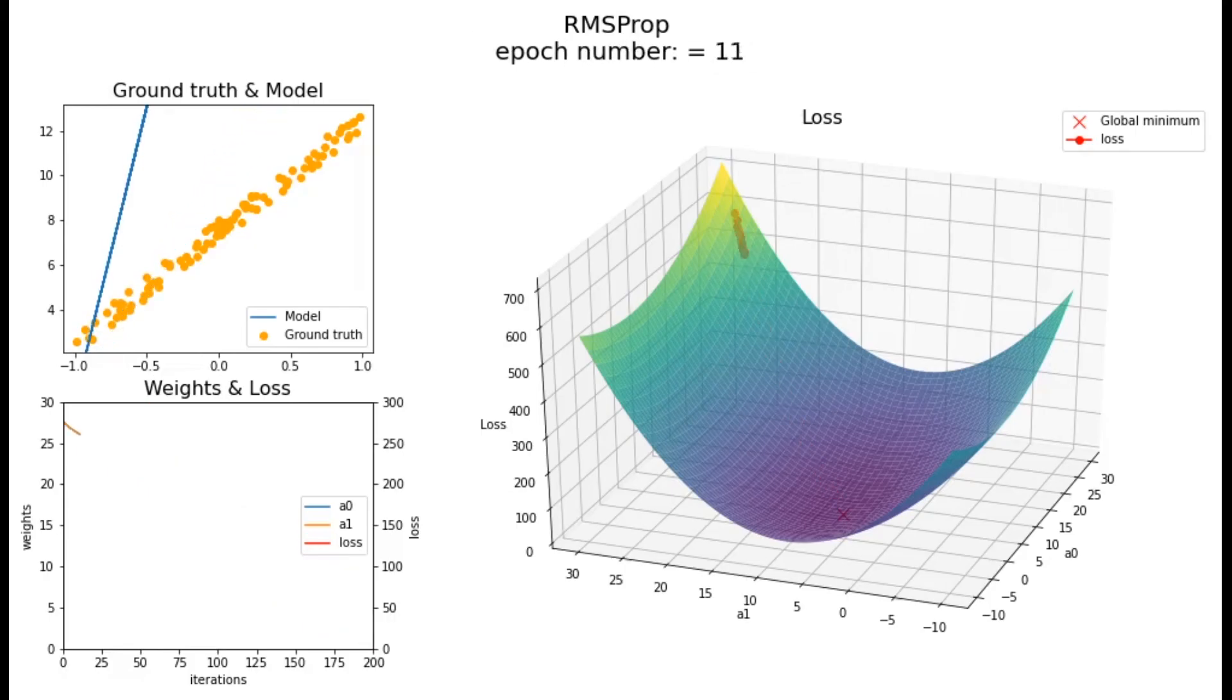So using RMS prop, there are a lot of advantages that you can utilize in order to converge quickly. In the next video, I will show you the advantages of combining both momentum-based algorithms as well as RMS prop to converge quickly and more stably, which is where Adam's optimizer comes into picture.